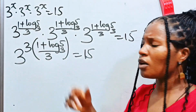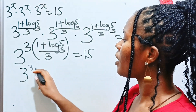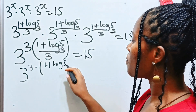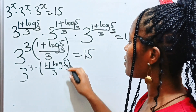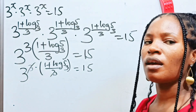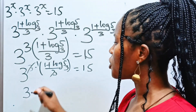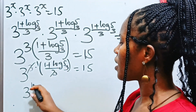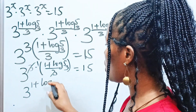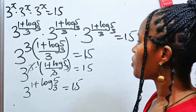That means we can write this as 3 to the power of 3 multiplied by (1 + log 5 base 3) divided by 3, equals 15. So the 3s divide out, giving 1, and we now have 3 to the power of 1 times (1 + log 5 base 3) — which still gives us 3 to the power of (1 + log 5 base 3) equals 15.